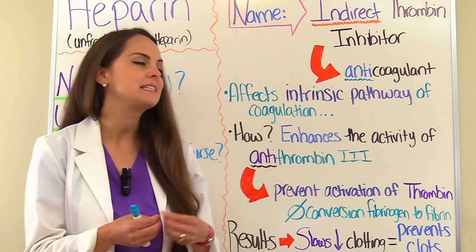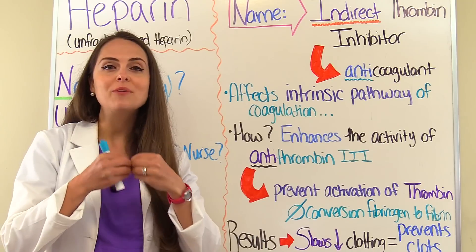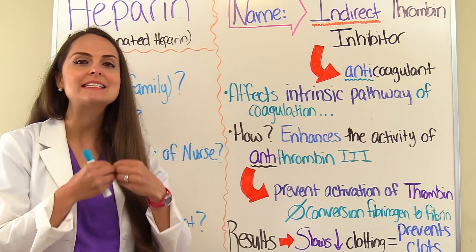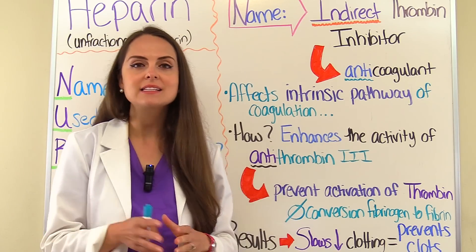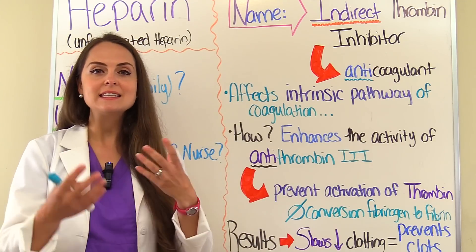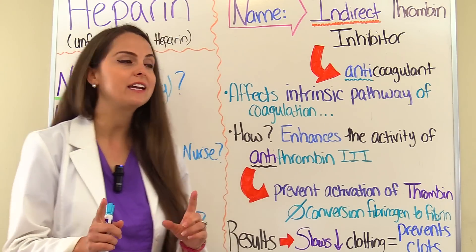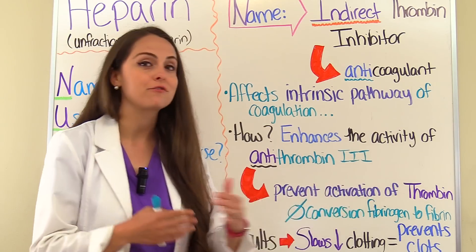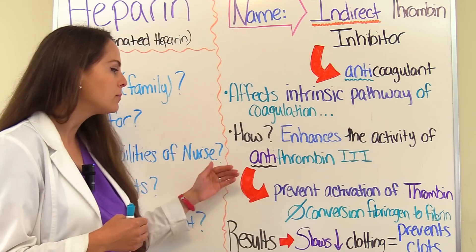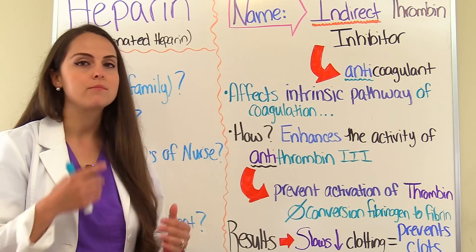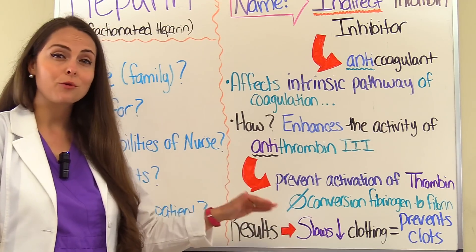Specifically, heparin will bind with a naturally occurring substance in the body called antithrombin 3, and when it does this it enhances the activity of antithrombin 3. Antithrombin 3 inhibits the enzymes that play a role in the clotting process, and it specifically prevents the activation of thrombin. If we prevent the activation of thrombin, we alter clotting because we prevent the conversion of fibrinogen to fibrin, which results in slower clotting times for our patient.